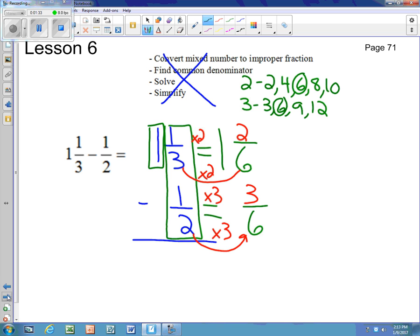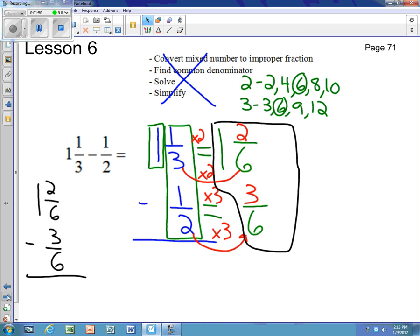So now I see that I have 1 and 2/6 minus 3/6. And for those of you who are having a tough time seeing that, I'm going to just rewrite it right here so it's easier for you to see. I can't subtract 2/6 minus 3/6 because subtraction does not have the commutative property. So I'm going to need to borrow. So I'm going to borrow from my whole number, which is 0.